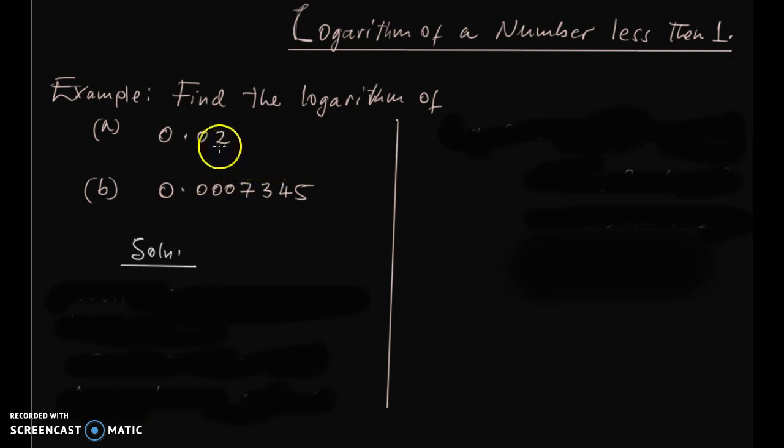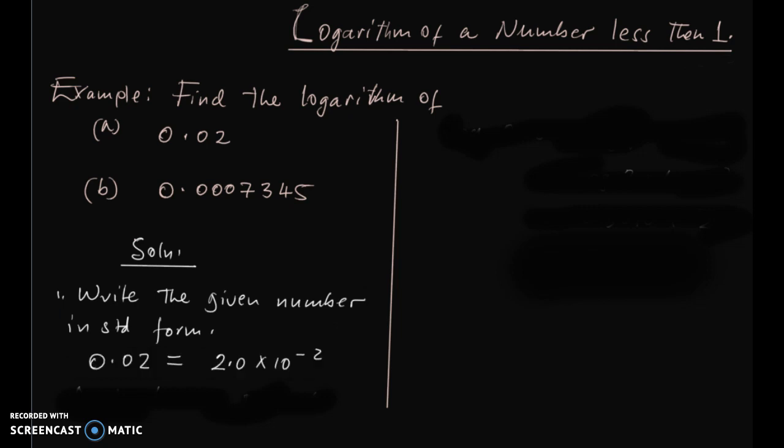Now let us look at how to read from the table the logarithm of 0.02. As usual we have to write the given number in standard form, so 0.02 will be equal to 2.0 times 10 power negative 2.